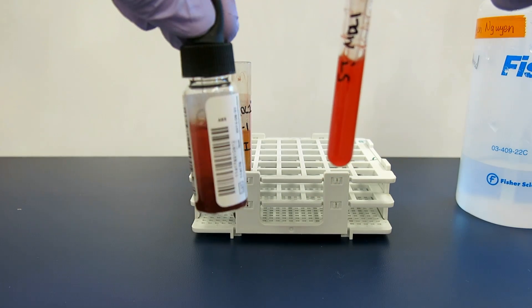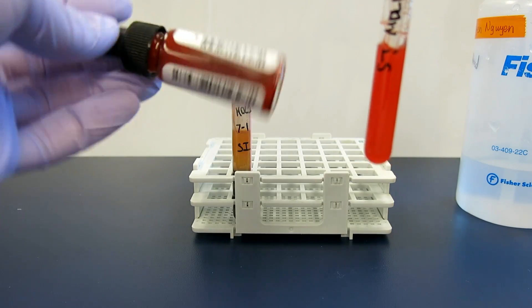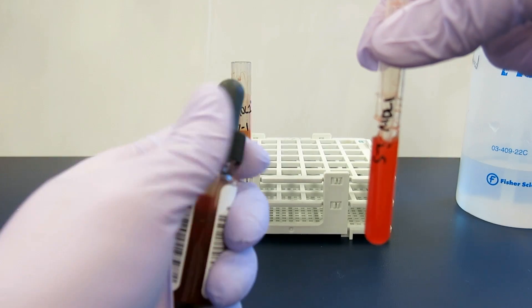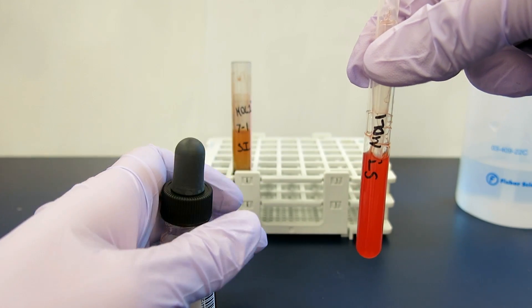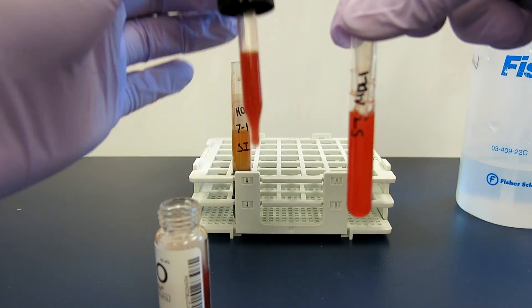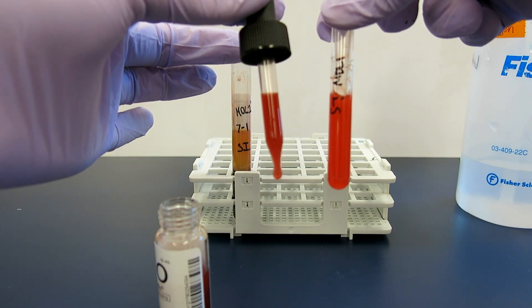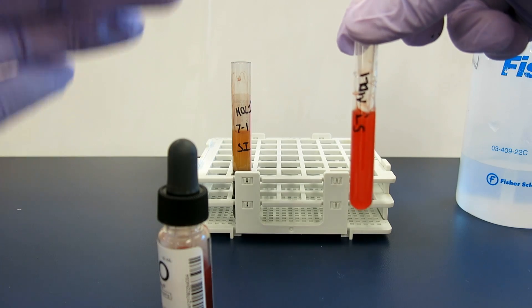The ratio must be correct or else it will cause a pro- or post-zone effect yielding false results. The tube I prepared is too light. I must go back and add more red cells. If the tube is too dark, you must add more saline. With practice, you will be able to get this correct on the first try.